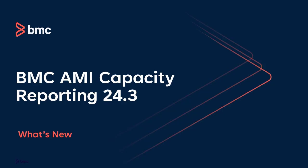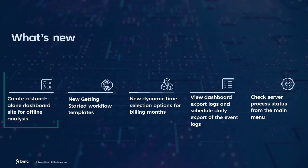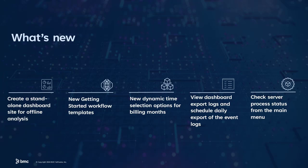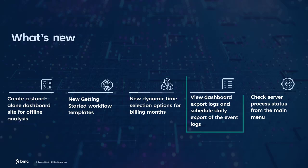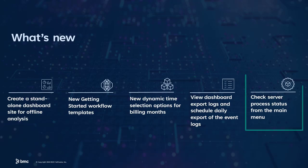BMC AIME Capacity Reporting 24.3 comes with new exciting features. Start with creating a standalone dashboard site for offline analysis. Use the new Getting Started workflow templates for better insights. Use the new dynamic time selection options for the billing months. View dashboard export logs and schedule daily export of the event logs. You can also check the server process status from the main menu.